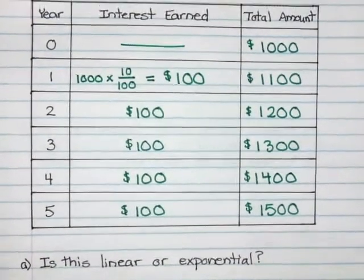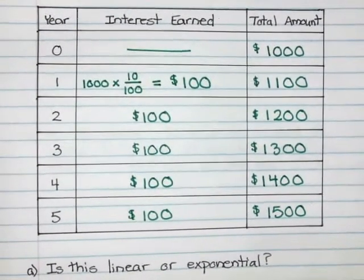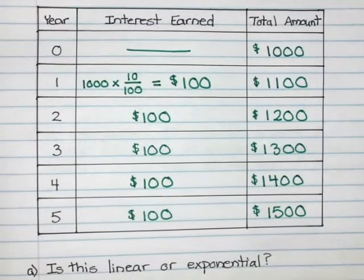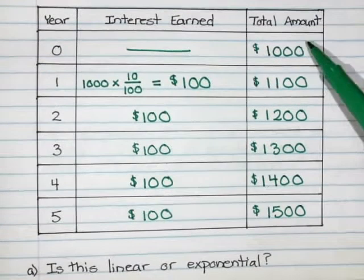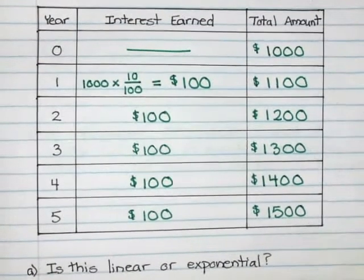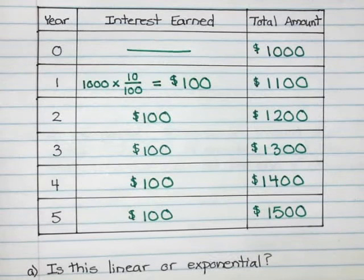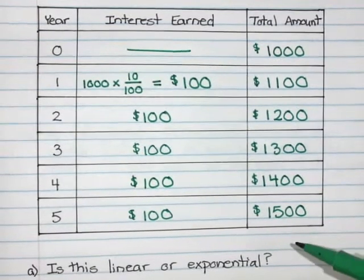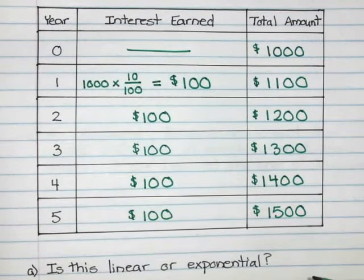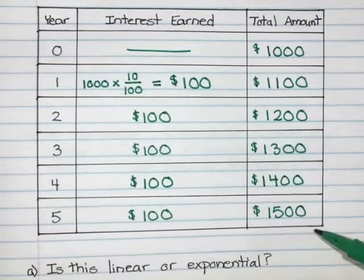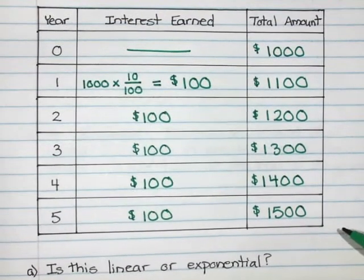So he started with $1,000. He now has $1,500, which means if you were to subtract 1,500 minus 1,000, he has made $500 in interest. I did say that's a really high interest rate and not very realistic, but that's a lot of money. So it's nice that he got some interest on his account. He now has more money than he did when he started.